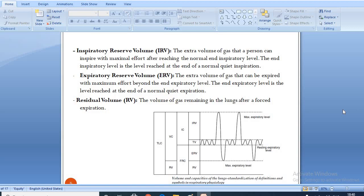Expiratory reserve volume is the extra volume of gas that can be expired with maximum effort beyond the end expiratory level. The end expiratory level is the level reached at the end of a normal quiet expiration. Residual volume is the volume of gas remaining in the lungs after a forced expiration. The graph shows the various parameters.